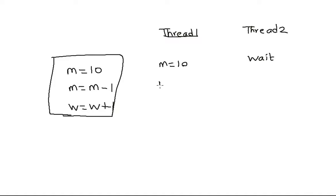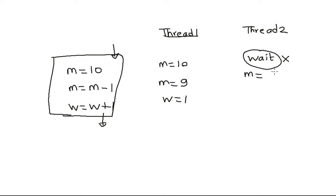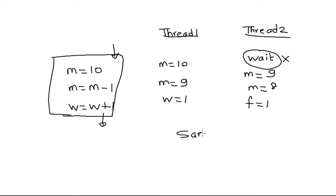Thread 1 executes: m = 10, then m = 9, then 1 million goes into the wife's account. Thread 2 is waiting the whole time. When Thread 1 exits the critical section, Thread 2 enters and sees m = 9 (because getBalance now returns 9), then computes 9 - 1 = 8, and my friend gets 1 million. Both threads executed in sequence and the balance is now consistent. This secured piece of code is called a critical section, and the method by which it is secured is called a lock.